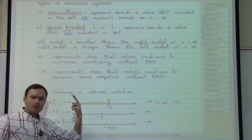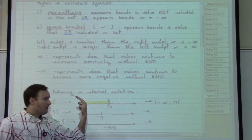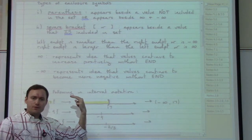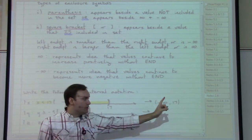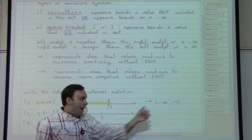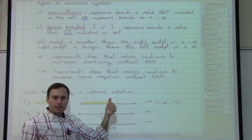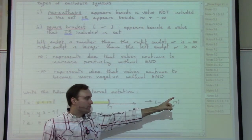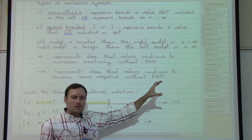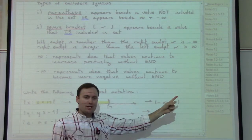To write our interval notation version of the statement, we ask: how far to the left does our color appear? Our color continues off to the left into the negative numbers forever, which means we need to use a negative infinity symbol. Our color goes only to the right until we hit 17. According to our rule, we always use a parenthesis beside the negative infinity symbol, and as stated, we use a parenthesis beside the 17. So the interval notation is (-∞, 17).